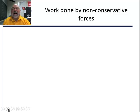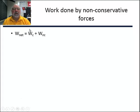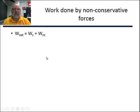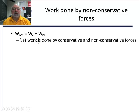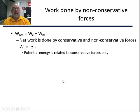Work done by non-conservative forces: the net work done is equal to the work done by conservative forces — gravity and springs — plus the work done by non-conservative forces. Friction and air resistance are the two main ones we'll use. The net work is done by the conservative and non-conservative forces together, and potential energy is related only to the conservative forces.